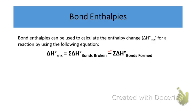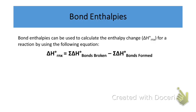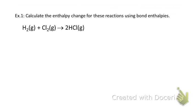We know we're at standard conditions by a little degree symbol called a knot — this is called delta H knot of a reaction. Anytime you see that symbol, we're at standard conditions. We'll define standard conditions more in lesson six. Now let's apply this equation to some real example problems. You'll need to flip back and forth between these example problems and your bond enthalpy table to solve them.